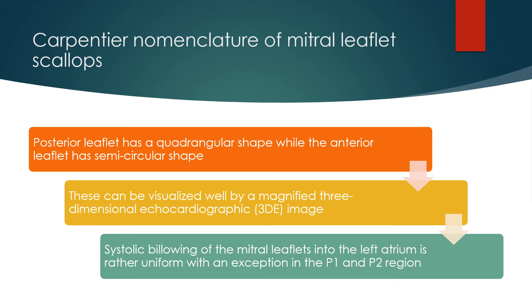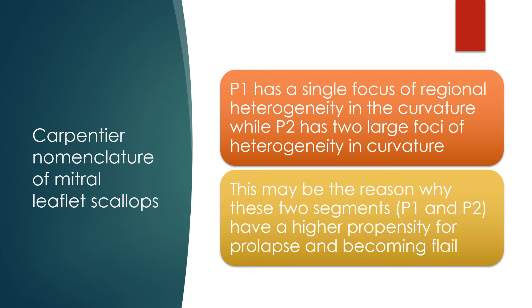Systolic billowing of the mitral leaflets into the left atrium is rather uniform, with an exception of the P1 and P2 region. P1 has a single focus of regional heterogeneity in curvature, while P2 has two large foci of heterogeneity in curvature. This may be the reason why these two segments, P1 and P2, have a higher propensity for prolapse and becoming flail.